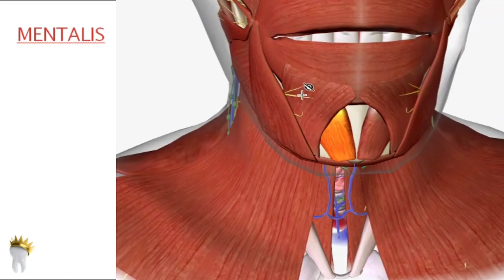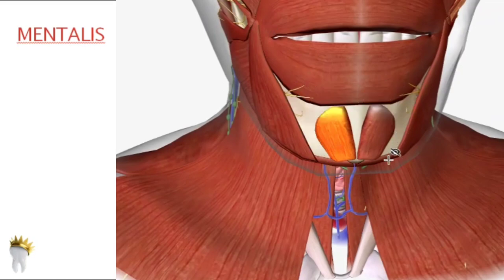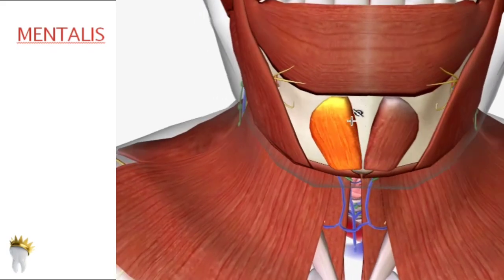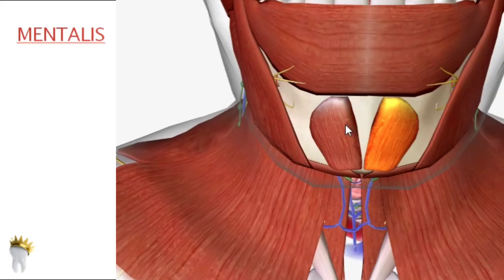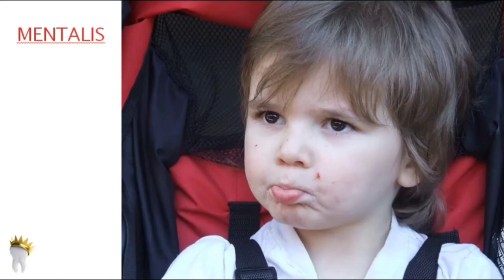Mentalis is a small muscle in the chin. Its two heads originate at the incisive fossa of the mandible and insert into the skin of the chin. Unlike other muscles here, it is an elevator of the lower lip — it protrudes the lower lip as when pouting. Uniquely, it does not insert into the orbicularis oris, and its action is opposite in direction to the other muscles.